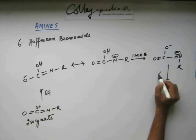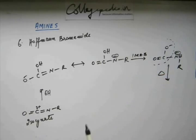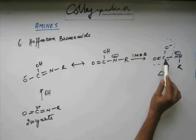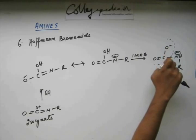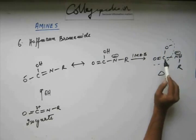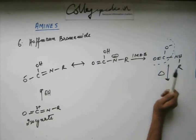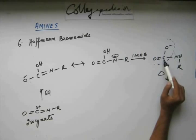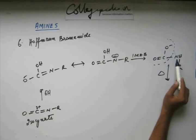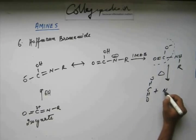Since the system is already heated and a good leaving group has formed, the carbon develops a positive charge, the O⁻ forms a double bond, and CO₂ is expelled as a leaving group. From the nitrogen side, the resulting amine anion is protonated to give the final amine product. This decarboxylation is the last step, producing the amine with one fewer carbon than the original amide.